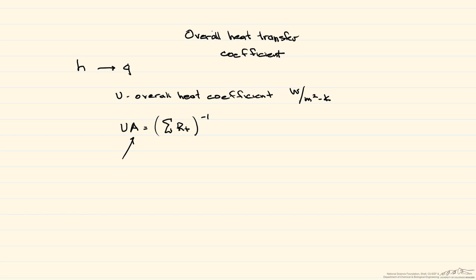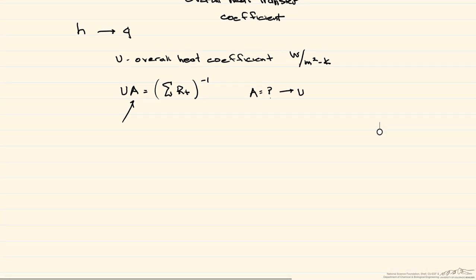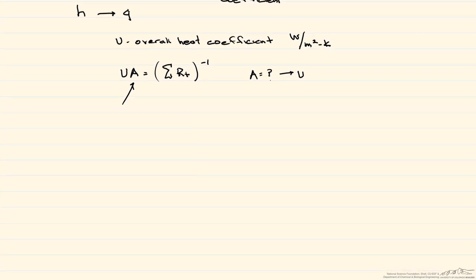So when you talk about an overall heat transfer coefficient U, you have to state what area does this apply to. So let's look at an example. We have a pipe, and this pipe is insulated.